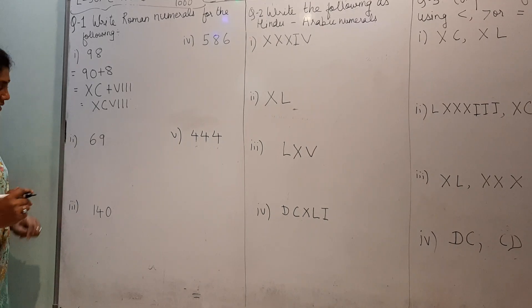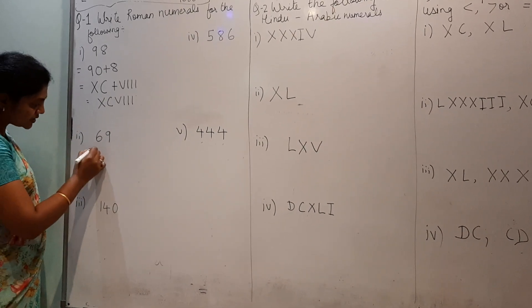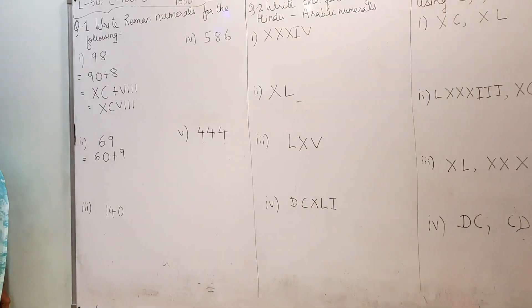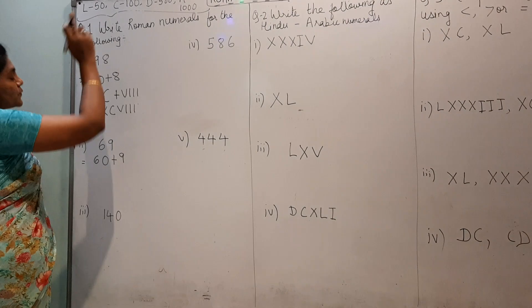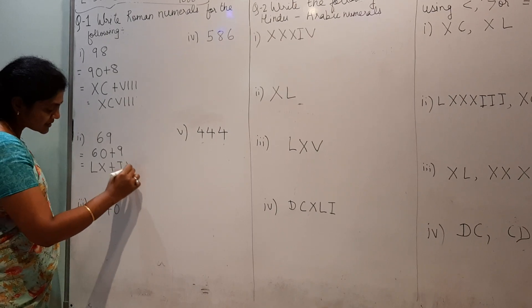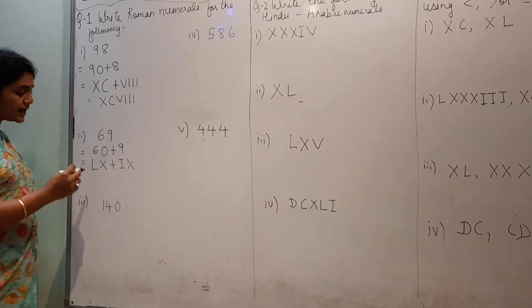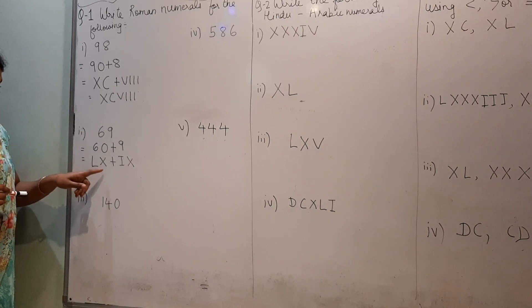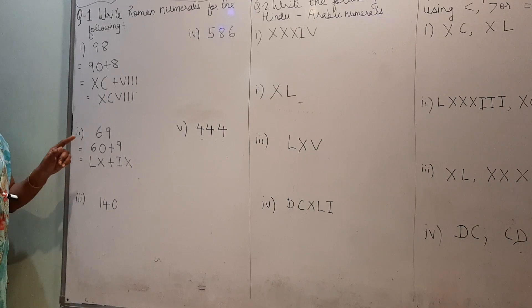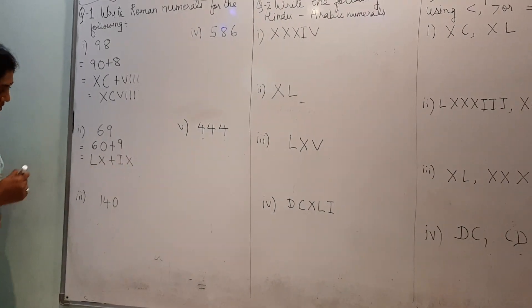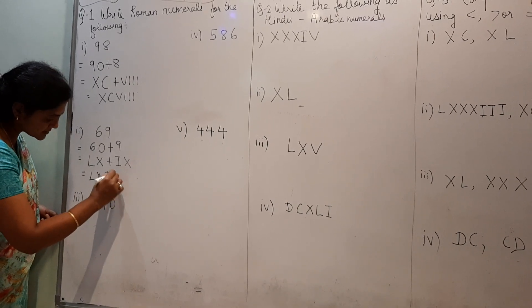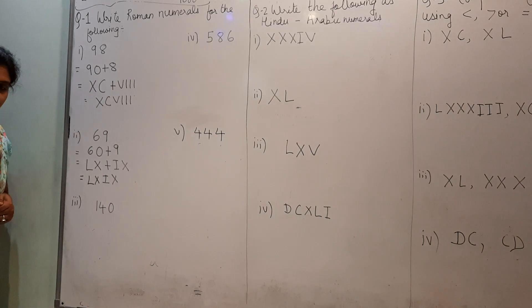Now, 69. You can break and write as 60 plus 9. If you want to write 60, you know, L is 50. So, I can write L, 10 plus IX. Now, LX, if your X is here, means you will be adding. So, 50 plus 10 is 60 and 9 here is IX. So, you will combine and this will be LXIX.